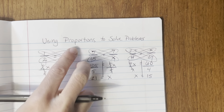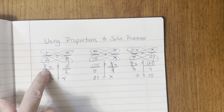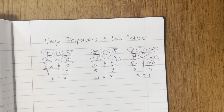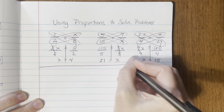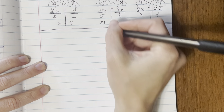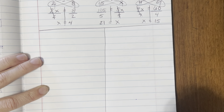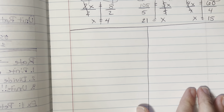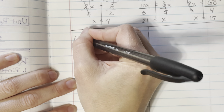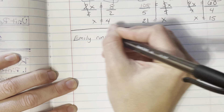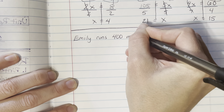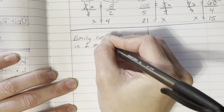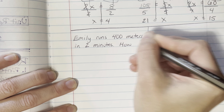So to recap: when we set up proportions as two equal fractions, we use the butterfly method to multiply, get a one-step equation, and solve for a missing number. Here's how we'll use this for word problems. Split your page — we're going to do four word problems. The first word problem is: Emily runs 400 meters in two minutes. How far can she run in 20 minutes?